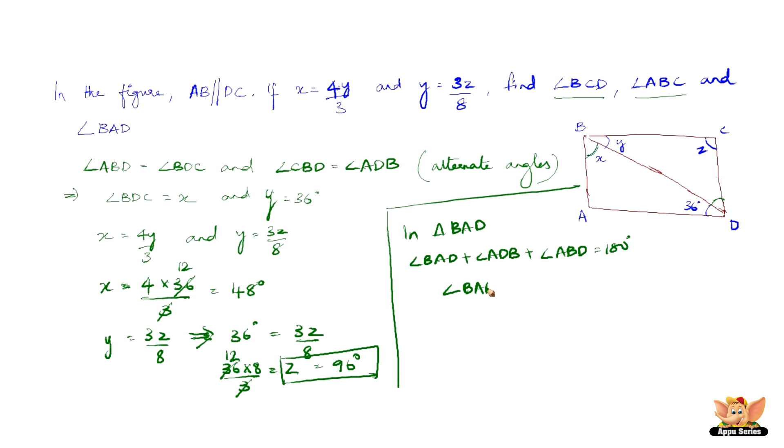Angle ADB is 36 degrees and angle ABD is 48 degrees, and that equals 180 degrees. Angle BAD equals 180 degrees minus 36 minus 48, which is 96 degrees. So by finding angle BAD, we found out all the angles required: angle BCD, angle ABC, and angle BAD.